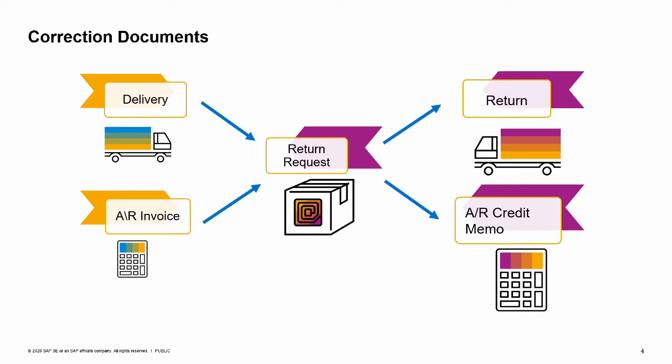The two main correction documents for the sales process are the return document and the AR Credit Memo. In this topic we focus on the AR Credit Memo. The AR Credit Memo, or Credit Note, is the document used to process returned items or to give a pricing credit once an AR invoice has been issued. Returns cannot be used for correcting issues arising from AR invoices; they are only used for correcting issues arising in delivery. One advantage of using the return request document is that users can use it for issues arising from both deliveries and AR invoices.